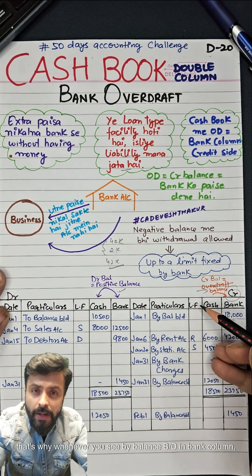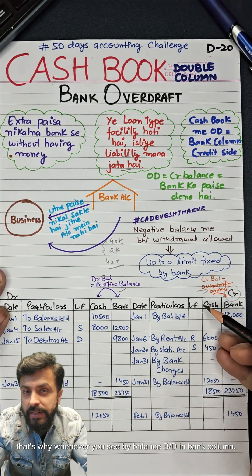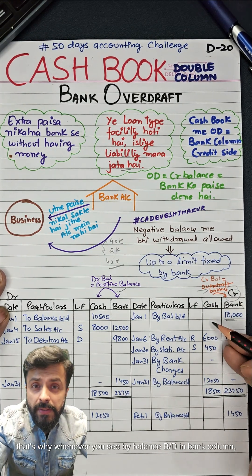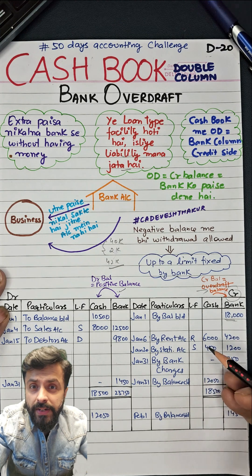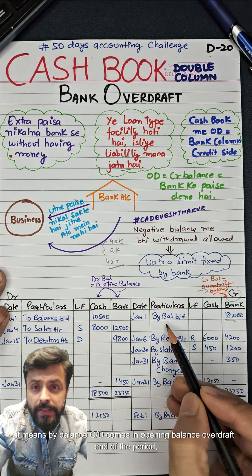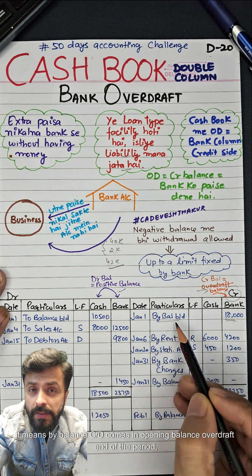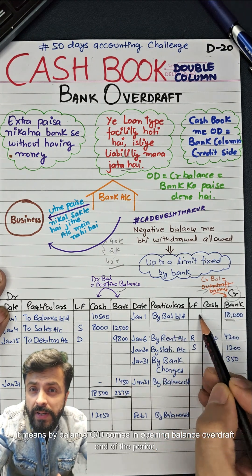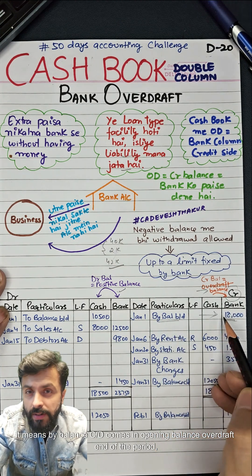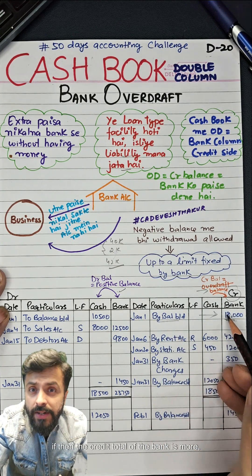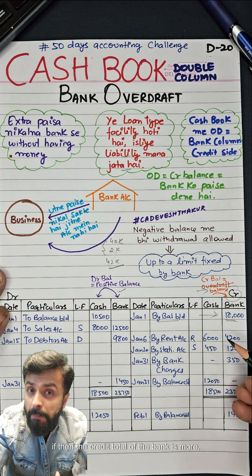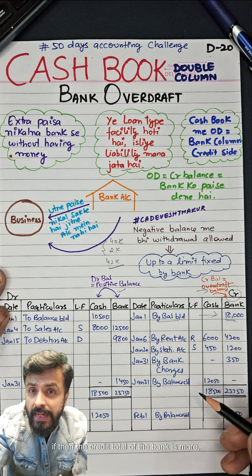That's why whenever you see 'By Balance BD' in the bank column, it means 'By Balance CD' comes in as the opening balance overdraft at the end of the period, if the credit total of the bank is more.